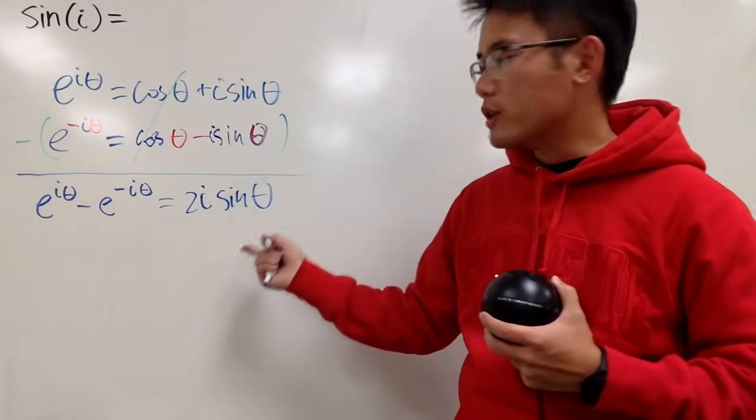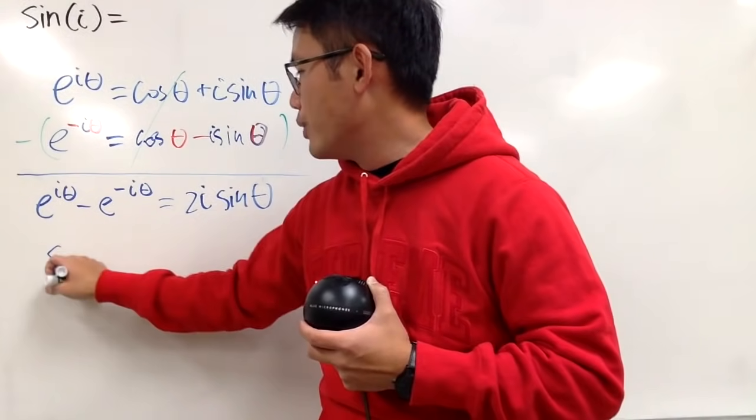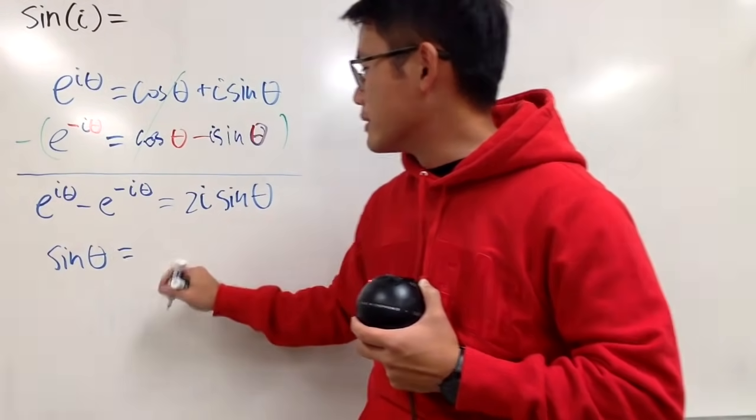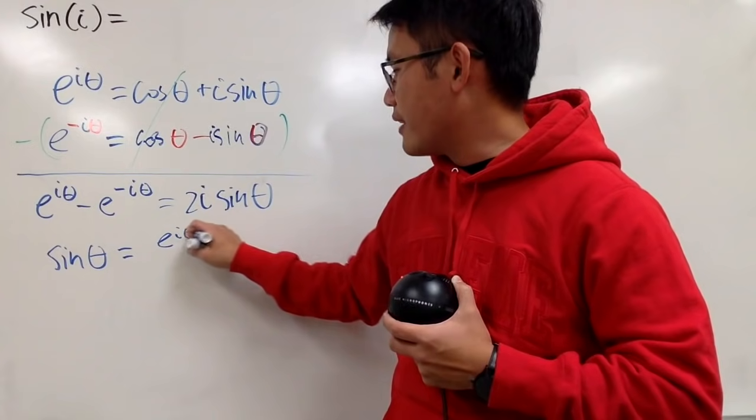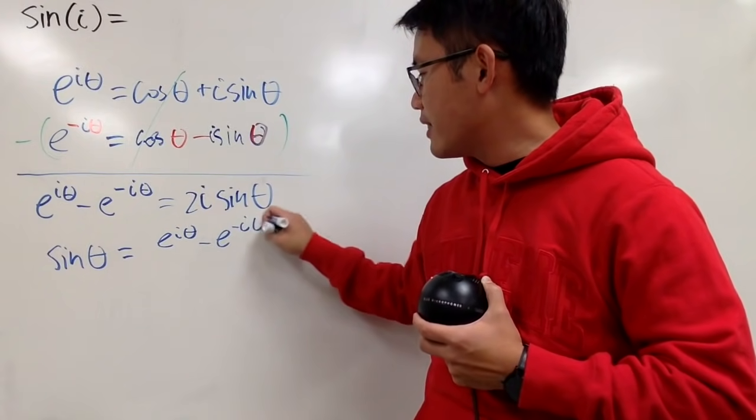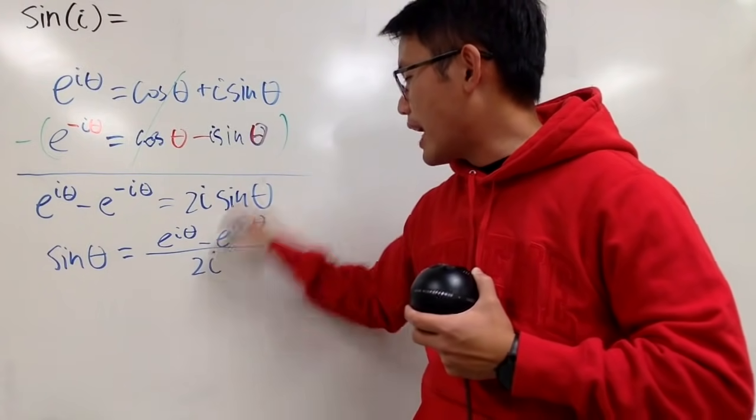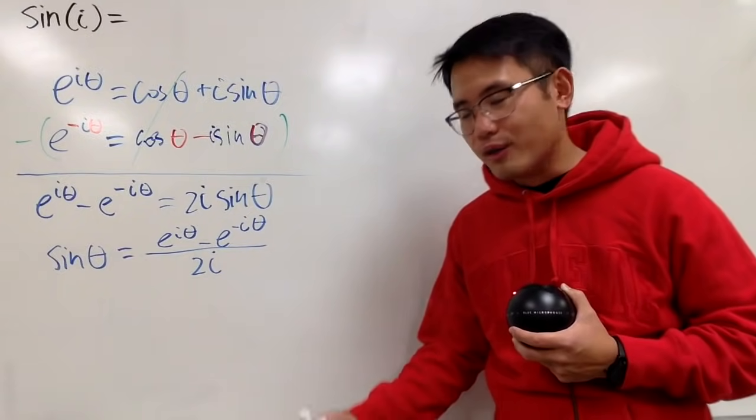So from here, of course, we can just divide by 2i on both sides. In other words, we get sine theta equals e to the i theta minus e to the negative i theta divided by 2i. And that's the complex definition of sine theta.